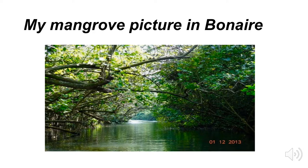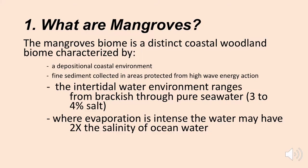This picture was taken in Bonaire in the Caribbean, just north of Venezuela — you can see you're in a woodland swampy environment along the coastline. The intertidal water environment ranges from brackish water — slightly salty — to pure sea water containing three to four percent salt. Where evaporation is very intense, water can have twice the salinity of normal ocean water. So mangrove trees live in a pretty harsh environment, from brackish water all the way to twice the ocean's salinity.